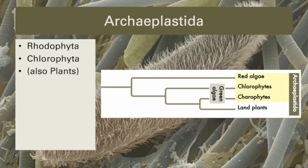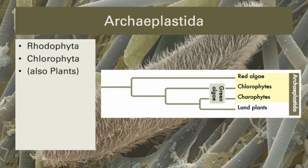Speaking of land plants, let's end our discussion of Archaeplastida where we began. This clade includes the kingdom Plantae — the land plants — which will be the exclusive focus of Unit 2. Also notice that while Rhodophyta and land plants are shown as monophyletic, the green algae are paraphyletic, since we cannot cleanly cut the tree in one spot and remove them without also removing the land plants.